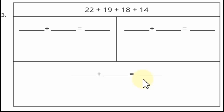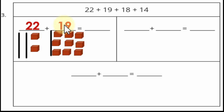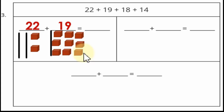What about 22 plus 19 plus 18 plus 14? We will start with 22 plus 19. Express 22 as 2 sticks (2 in tens) and 2 cubes (2 in ones). Express 19 as 1 stick (1 in tens) and 9 cubes (9 in ones). Now add 2 to 9 in the ones place: 2+9 = 11. We put 1 in the ones and carry 1 ten. 1+1+2 = 4 in tens. So the result of 22+19 is 41.